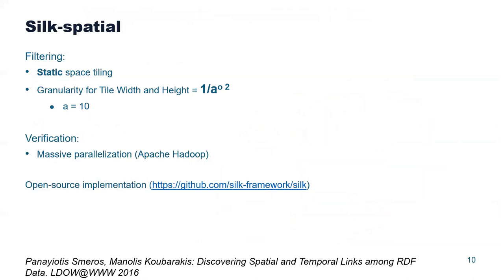The first work that addressed geospatial interlinking and actually defined this problem was SILK Spatial. For the filtering step, it employs a static approach in the sense that the tiles it defines have dimensions independent of the input data — they depend only on a parameter A. For verification, it exploits massive parallelization on top of Apache Hadoop in order to lower the overall running time.